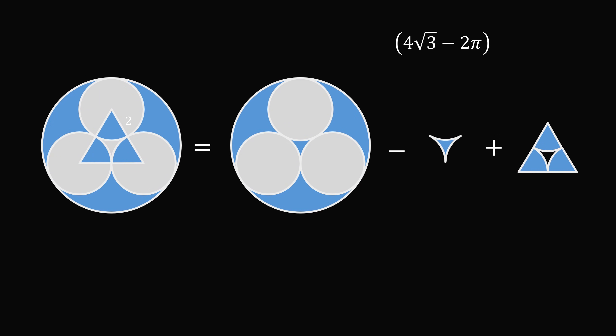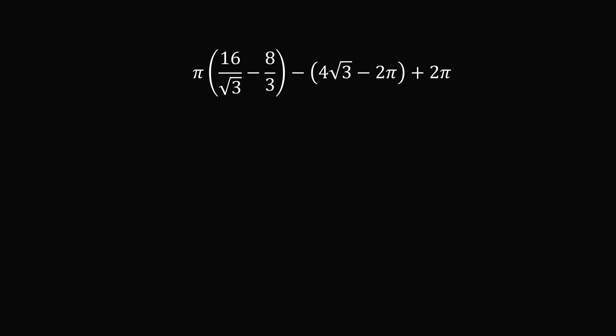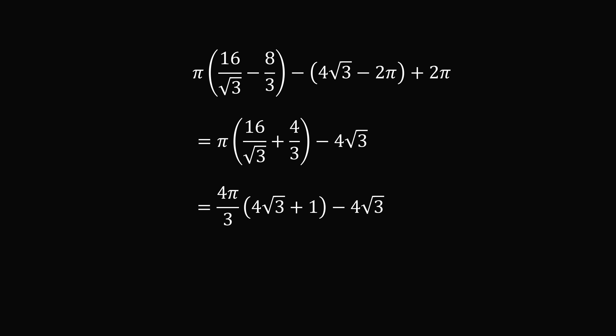So we've calculated the second part of this expression. Then we recall that the areas of the three circular sectors together is equal to 2 pi, so we'll add that back in. We've now figured out an expression for the total area of the regions shaded in blue. We just need to simplify this expression. We'll group all the terms that involve pi, and then subtract out 4 times the square root of 3. It's equal to 4 over 3 times pi multiplied by the quantity 4 root 3 plus 1, then subtract out 4 times the square root of 3. And this is approximately equal to 26.281. And that's the answer.